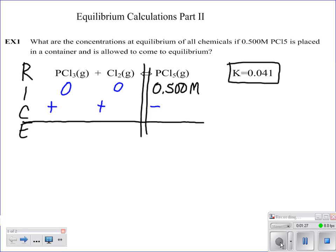So hopefully you can look at this and say that you just have to use x values for this. And remember, on this step, with your change, you're looking at your coefficients. So you're going to have to subtract x from your products, and you're going to have to add 1x to each of your reactants. So when you add it up to get to your equilibrium concentration, you get x's for both of these, and you get 0.5 minus x for your product.